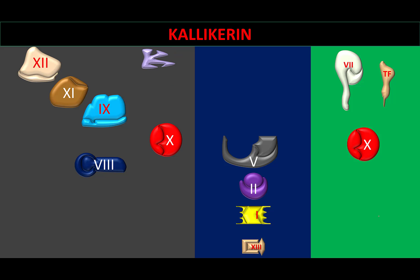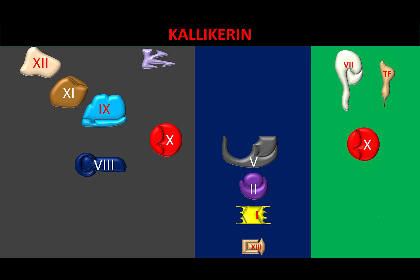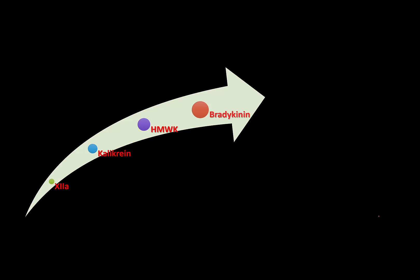Similarly, kallikrein again activates Factor 12, and Factor 12 in turn activates kallikrein. This is how the coagulation cascade interacts with the kallikrein-kininogen system. Factor 12 gets activated, which activates kallikrein, which converts high molecular weight kininogen into bradykinin.